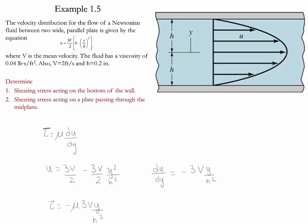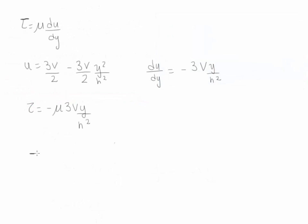If we substitute the values that we know for viscosity, velocity, and the value of h, we obtain the following. τ = -0.04 lb·s/ft² times 3 times 2 ft/s times y divided by 0.2 inches squared.